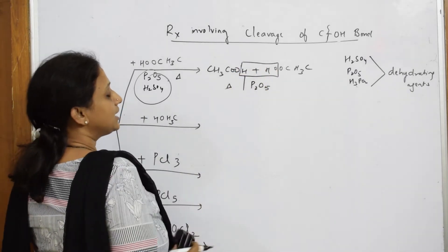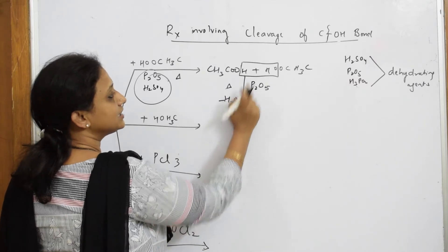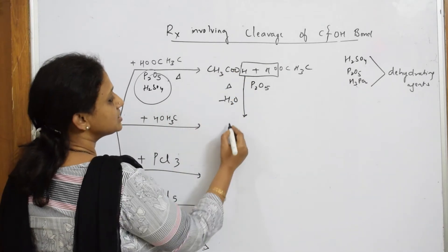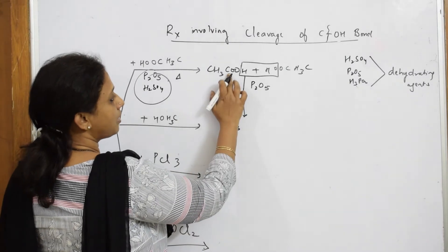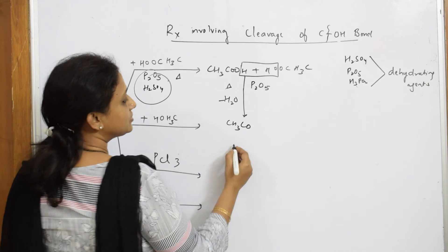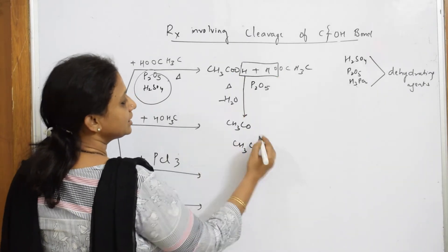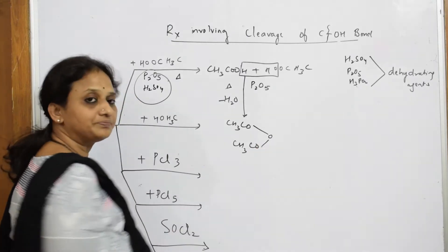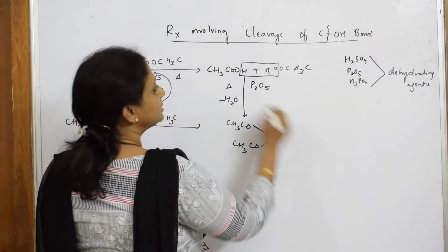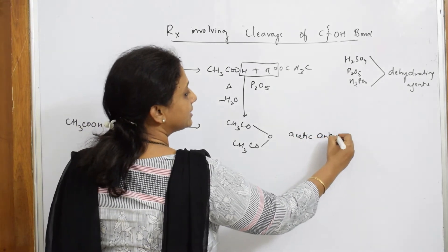Observe carefully: one H from here and one OH from here gets eliminated. What do I get? I have to eliminate water from the reaction because this is dehydrating the reaction. Then join everything. Start with CH3CO. Where is one CO here? Also start from here: CH3, there is one CO here. What is linking? O is linking both.